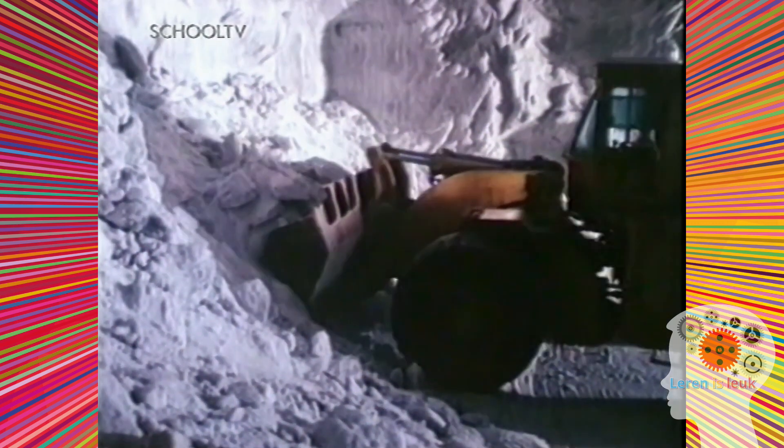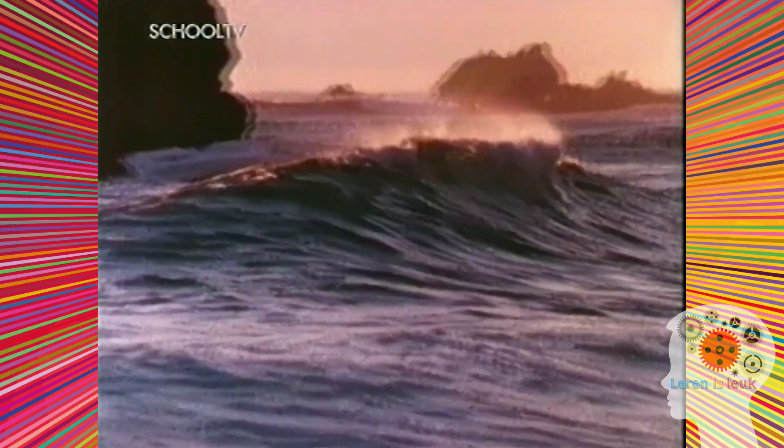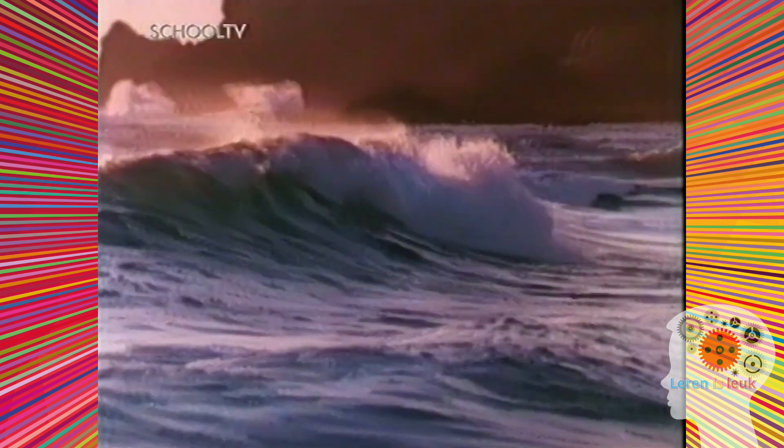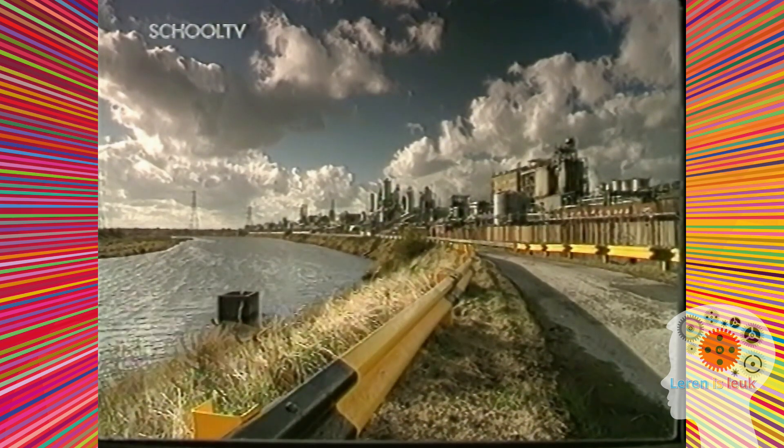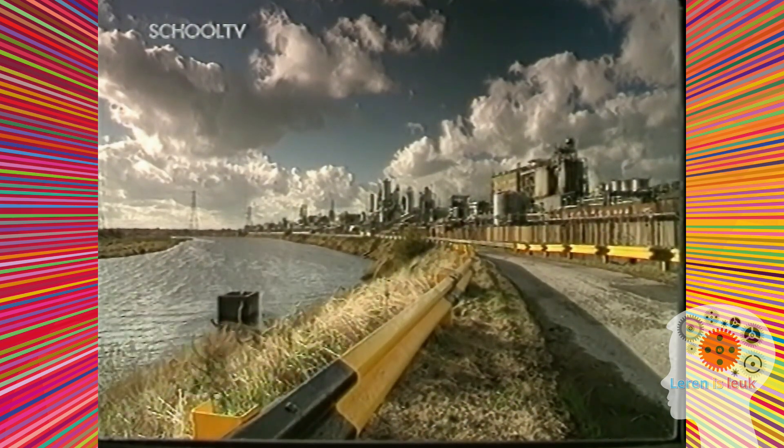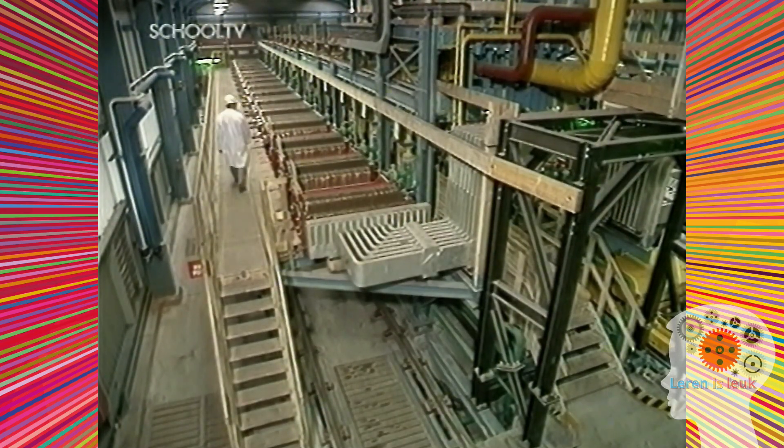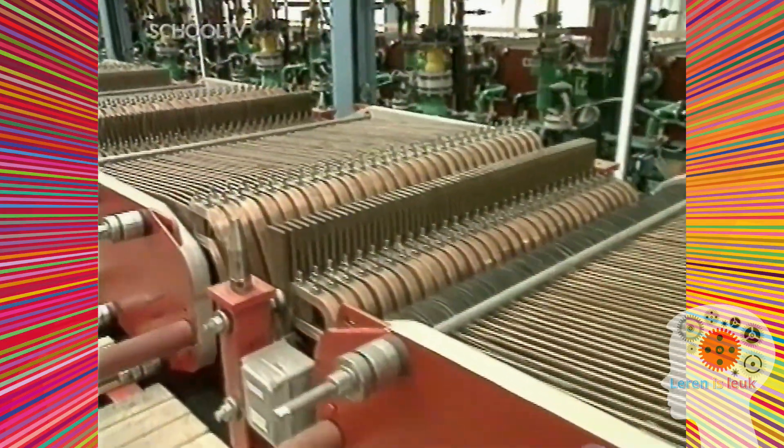Natriumchloride of zout is een van de goedkoopste en meest voorkomende grondstoffen. Het komt in enorme hoeveelheden in de bodem voor als steenzout en in opgeloste vorm in alle wereldzeeën. Elektrolyse van natriumchloride oplossingen is een belangrijk industrieel proces. Vermeng het zout met water, voer er elektrische stroom doorheen en je krijgt een aantal nuttige stoffen.